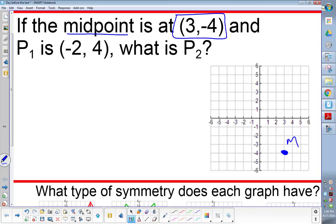It says point 1 is at negative 2, 4. So, I'm going to go to negative 2, 4. There's my first point.